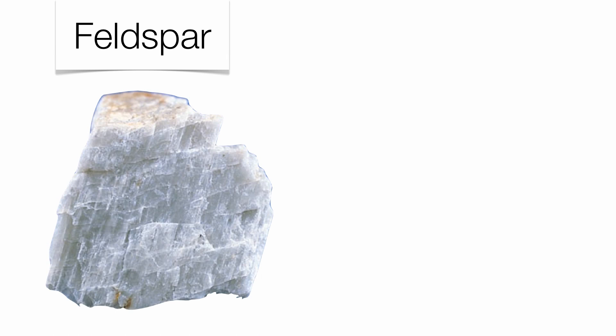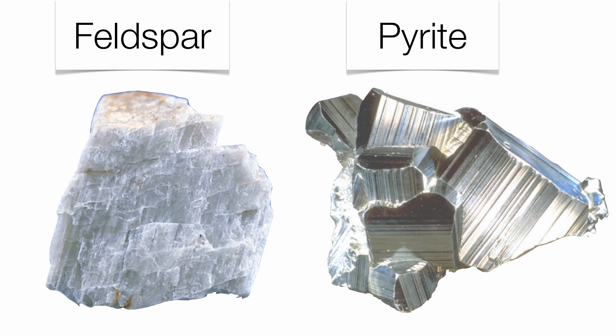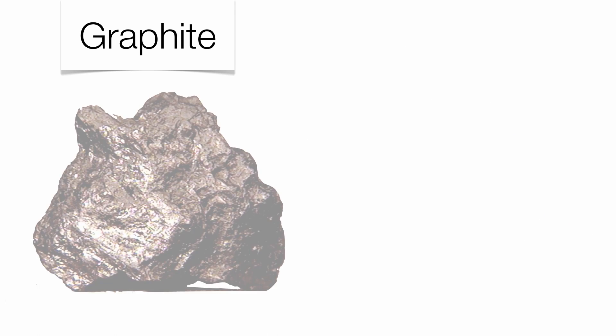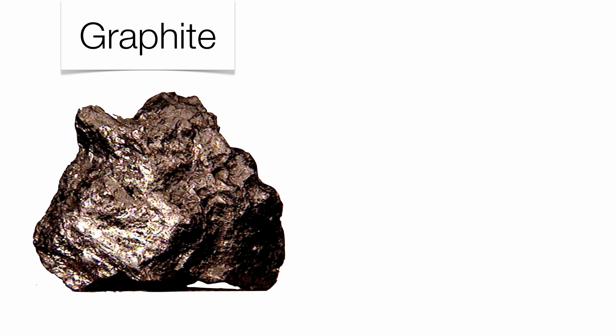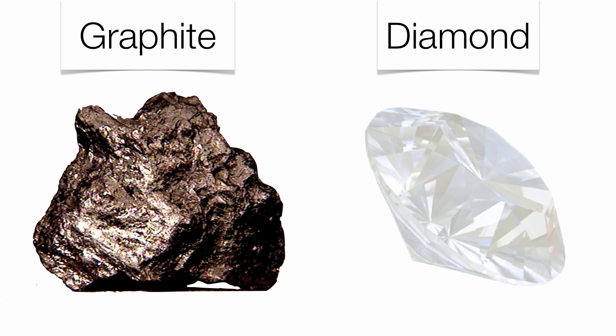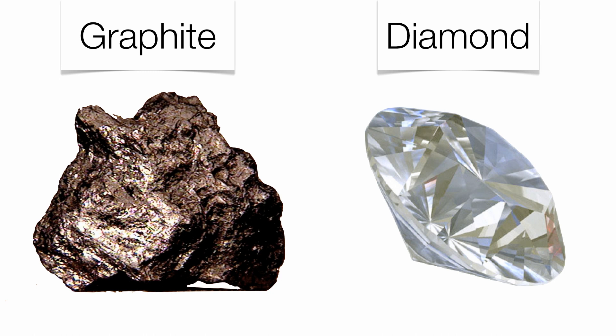Feldspar is dramatically different from pyrite, and probably the best example here is graphite, which is made up of carbon, and diamond, which is also made up of carbon. You have two completely different minerals made of the same element. It's just that the carbon atoms in graphite are arranged very differently from the carbon atoms in a diamond.